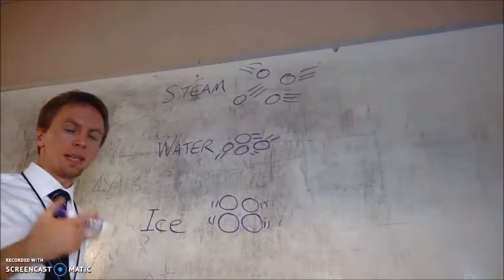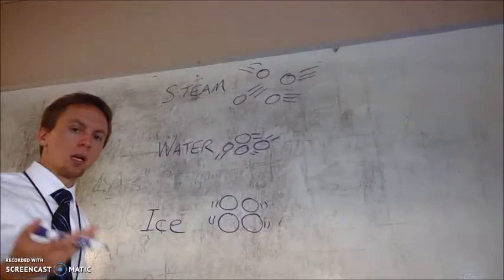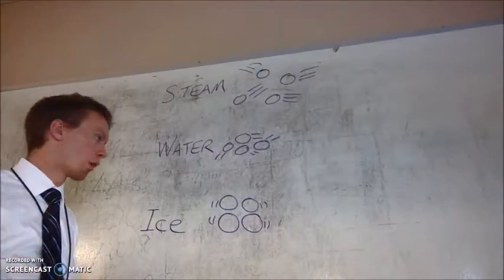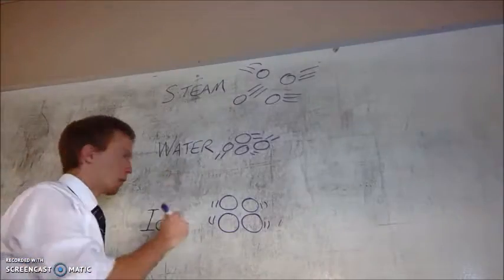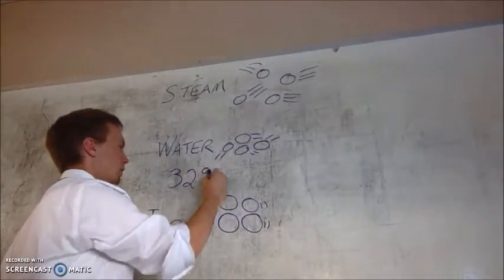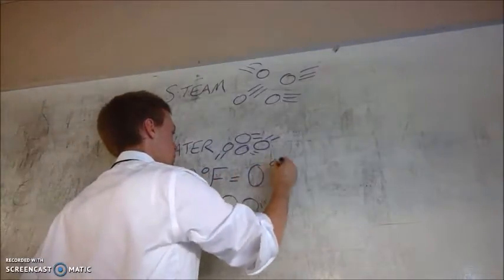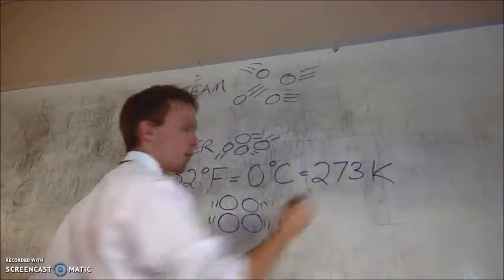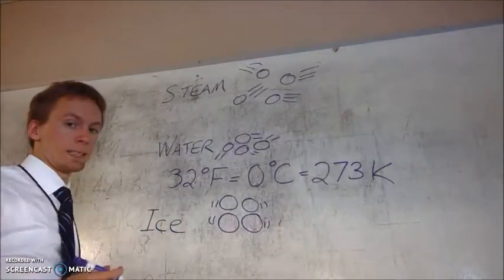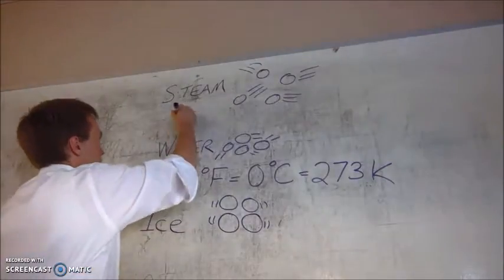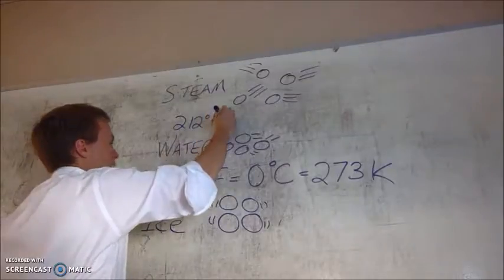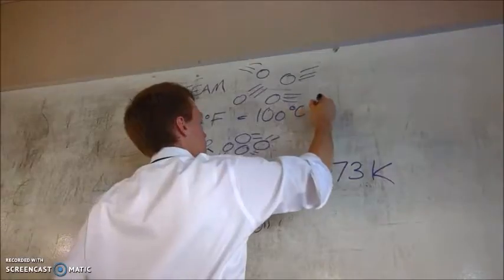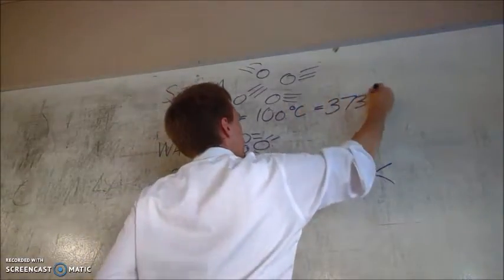For each substance, this happens at different temperatures, but we're going to focus on when these phase changes occur or these changes in states of matter occur for water. Ice to water occurs at 32 degrees Fahrenheit, which is equal to 0 degrees Celsius or 273 Kelvin. For going from water to steam to make water boil, that's going to happen at 212 degrees Fahrenheit, which is equal to 100 degrees Celsius or 373 Kelvin.